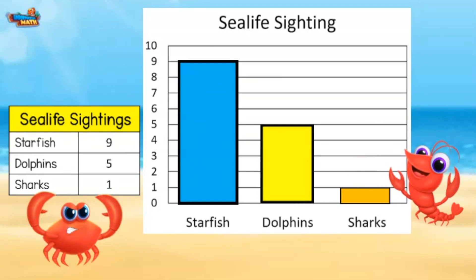We can also compare numbers on the graph. How many more starfish did we see than dolphins? Well, we saw 9 starfish and 5 dolphins. To find the difference we need to subtract the two numbers. 9 minus 5 equals 4, so we saw 4 more starfish.